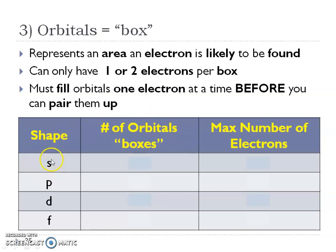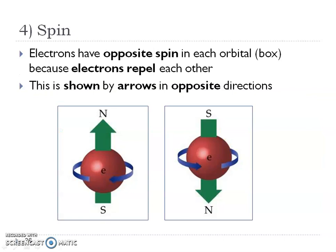Then we're going to have spins. In each of our boxes — each orbital — we have to have those electrons be opposite spin because they repel each other. We show this by an arrow going up and then an arrow going down. You just need to understand those four quantum numbers, what they represent, and how many electrons are in each energy level.